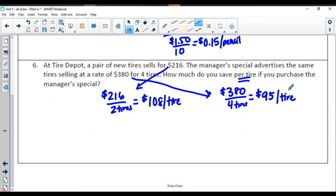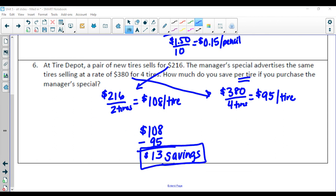So how much do you save per tire if you purchase the manager's special? Savings would be $108 minus that $95, so that's going to give you $13 savings by doing the special. There you go. There's your unit rate lesson practice packet.